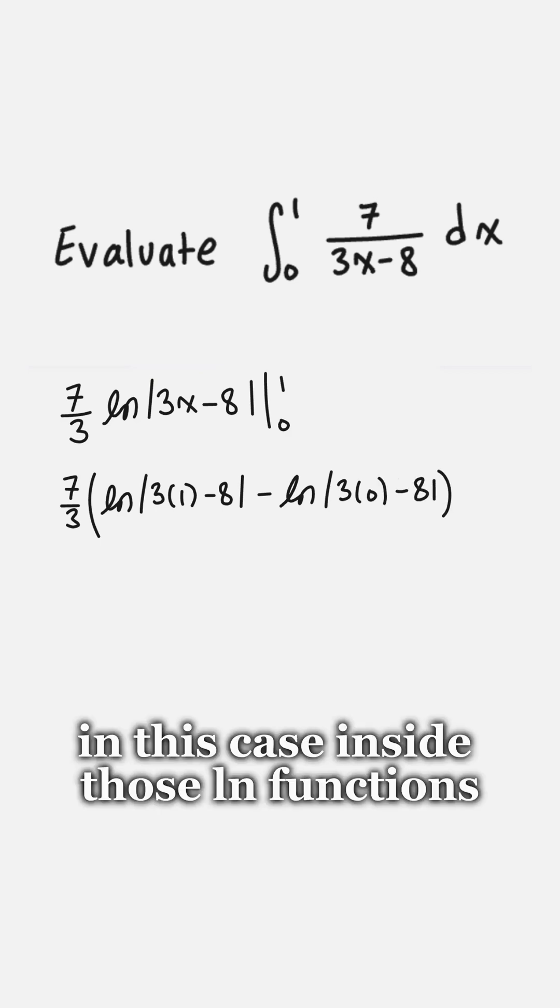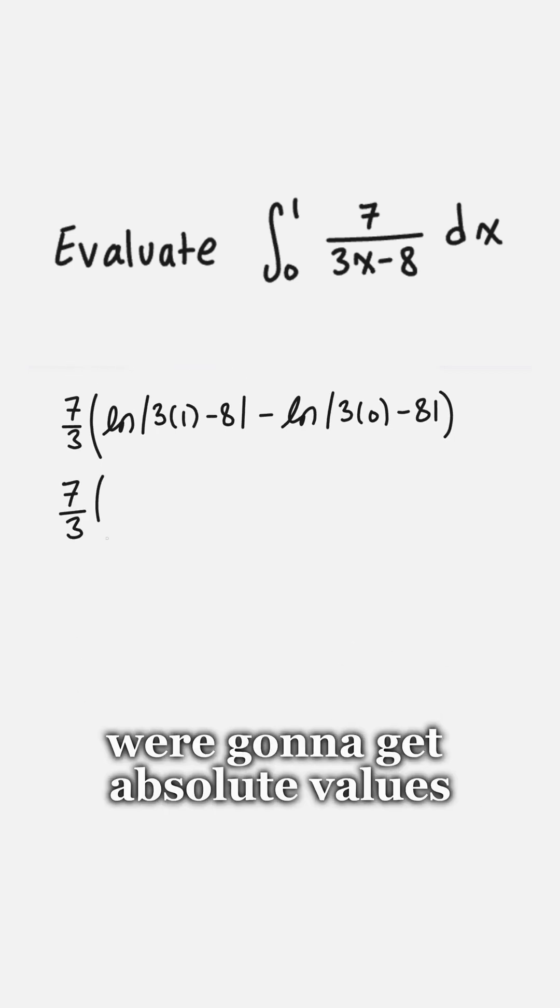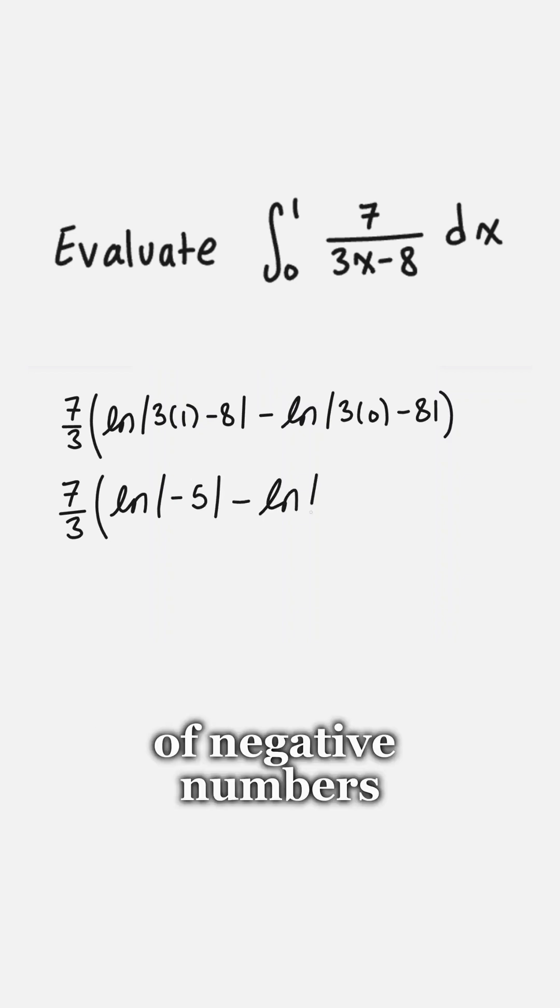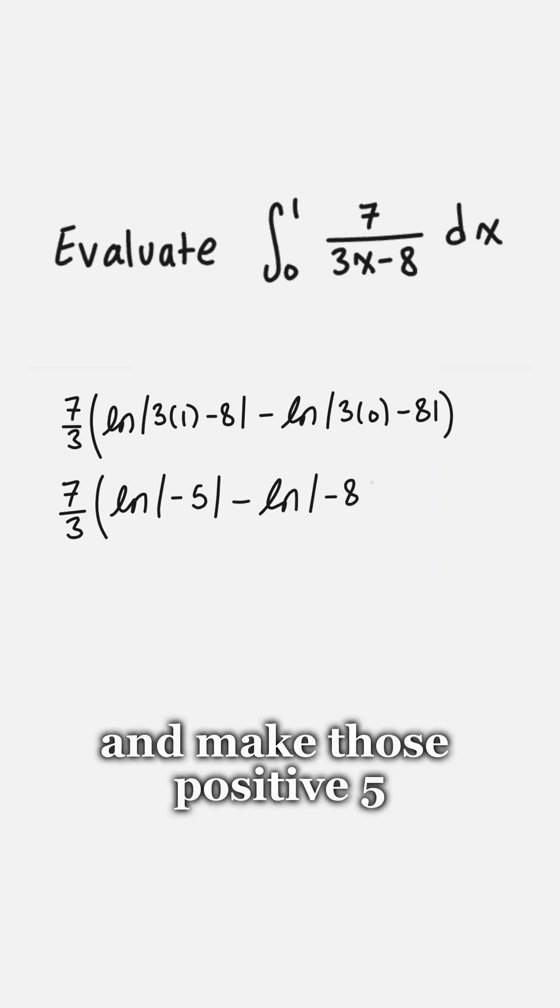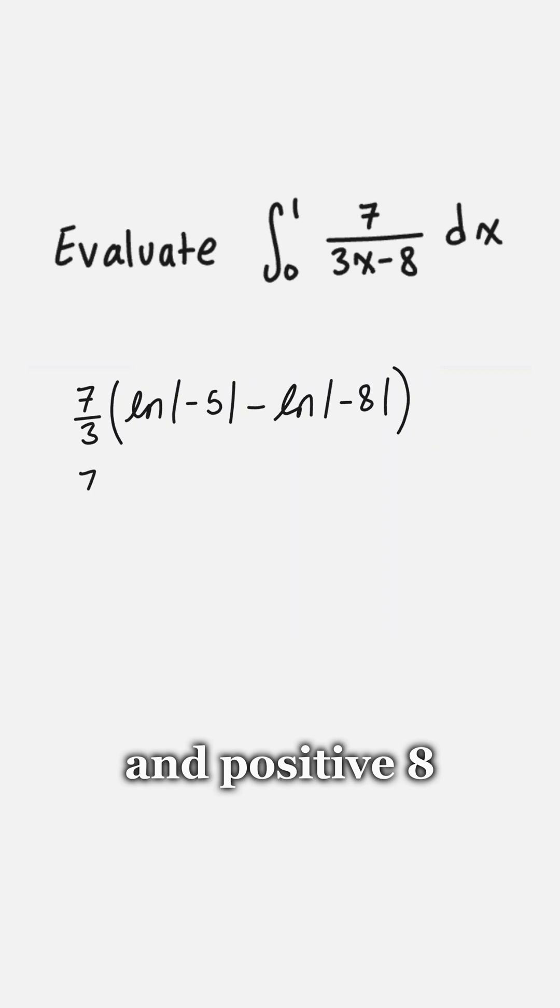In this case inside those ln functions we're going to get absolute values of negative numbers, so we can just flip those around and make those positive 5 and positive 8.